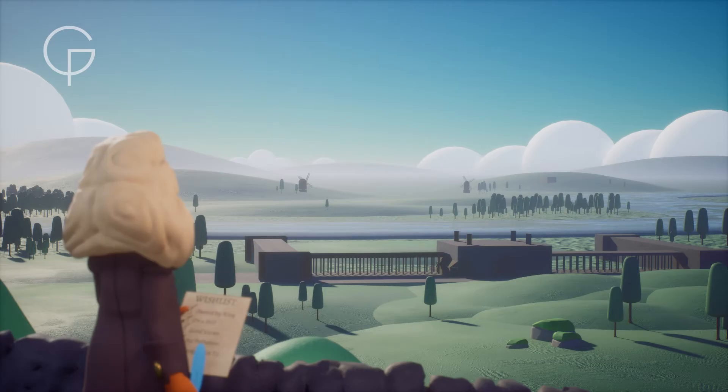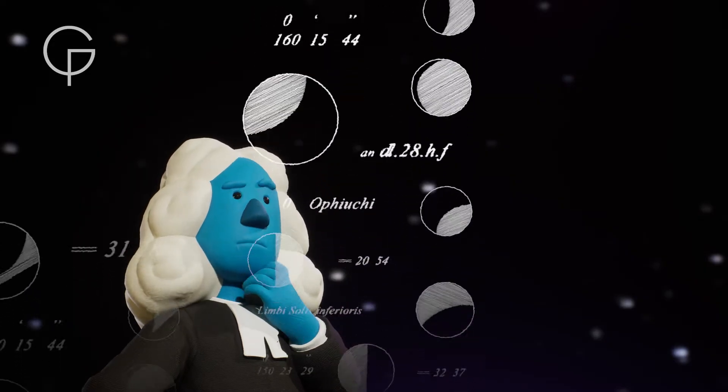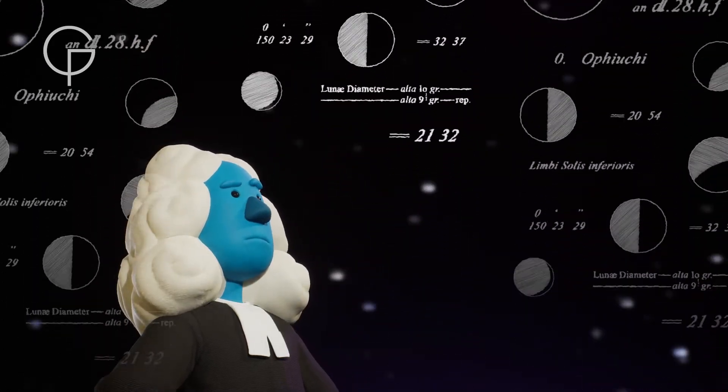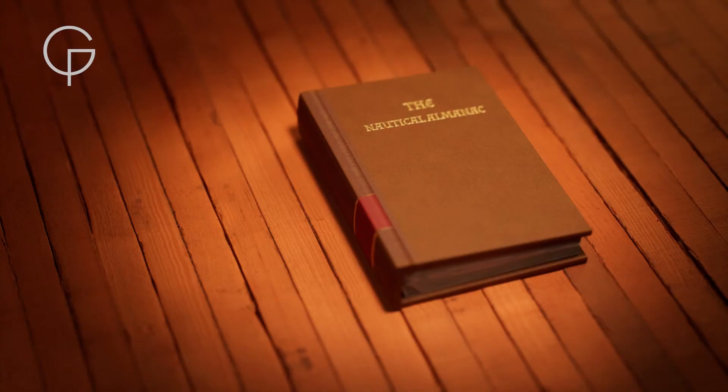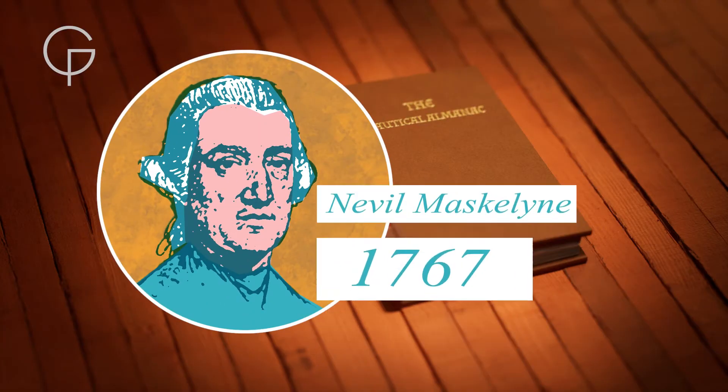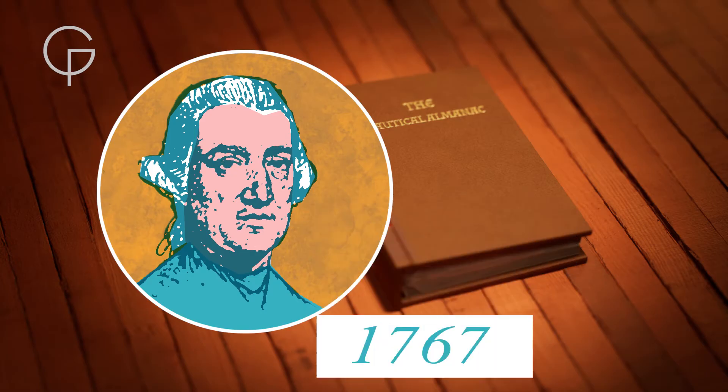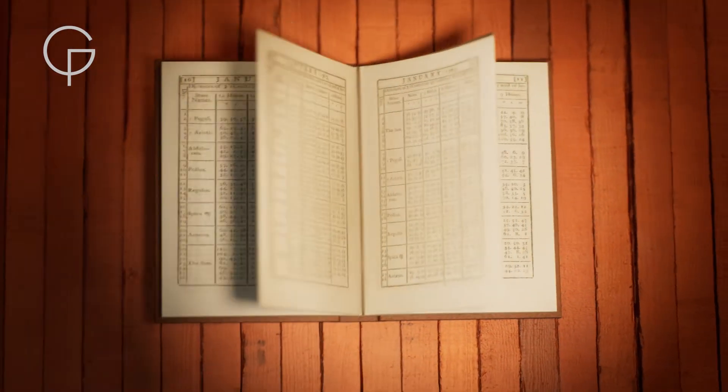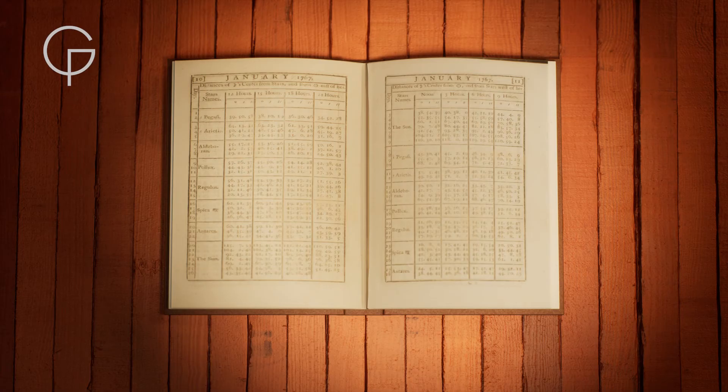Over the next 40 years, John Flamsteed made thousands of observations, but his book was too technical for sailors. It wasn't until 1767 that the observatory began to produce an annual book called the Nautical Almanac that helped sailors calculate their longitude more easily.